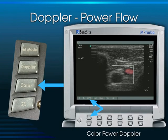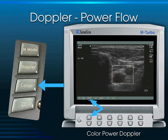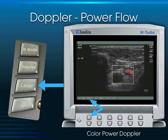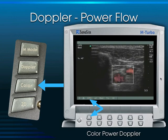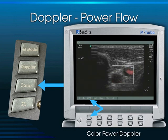Then there's power flow. After enabling color Doppler, you can toggle to power flow, which displays an orange-only appearance — it's not directional, much less angle-dependent, and easier to work with than color flow. It's also more sensitive and useful in low-flow states, such as the lymph nodes or testicles.